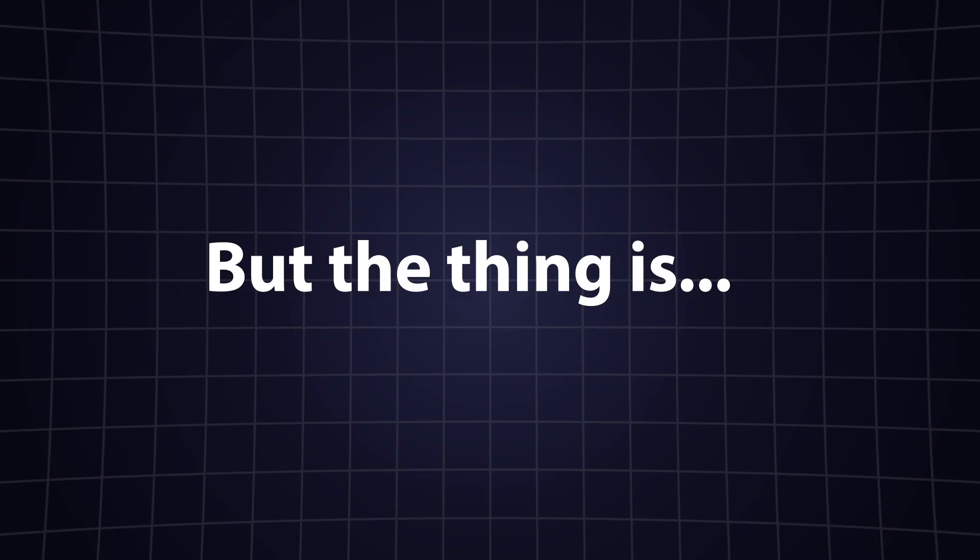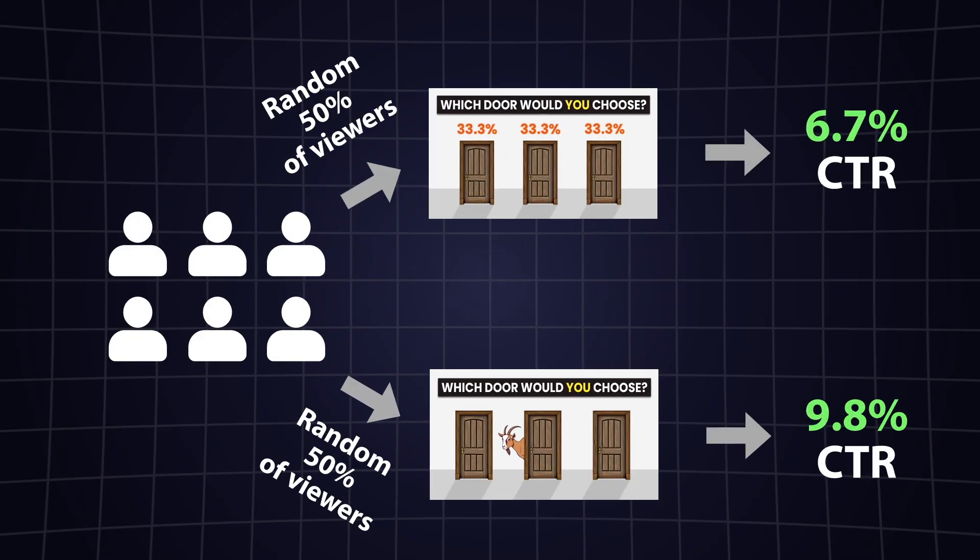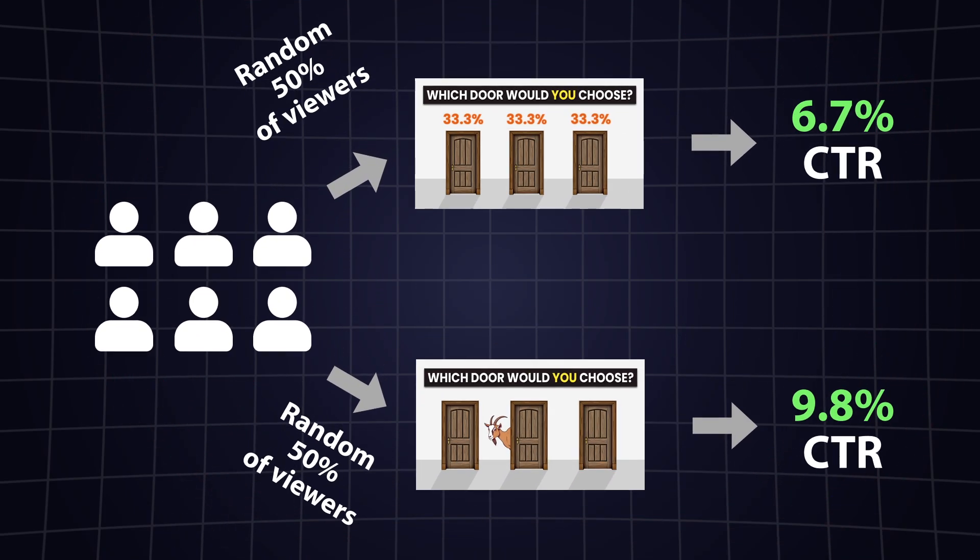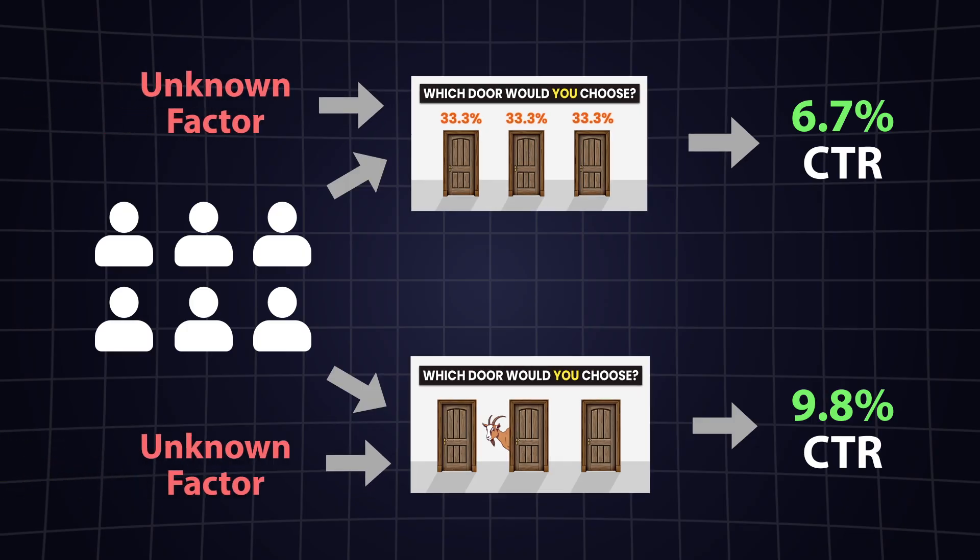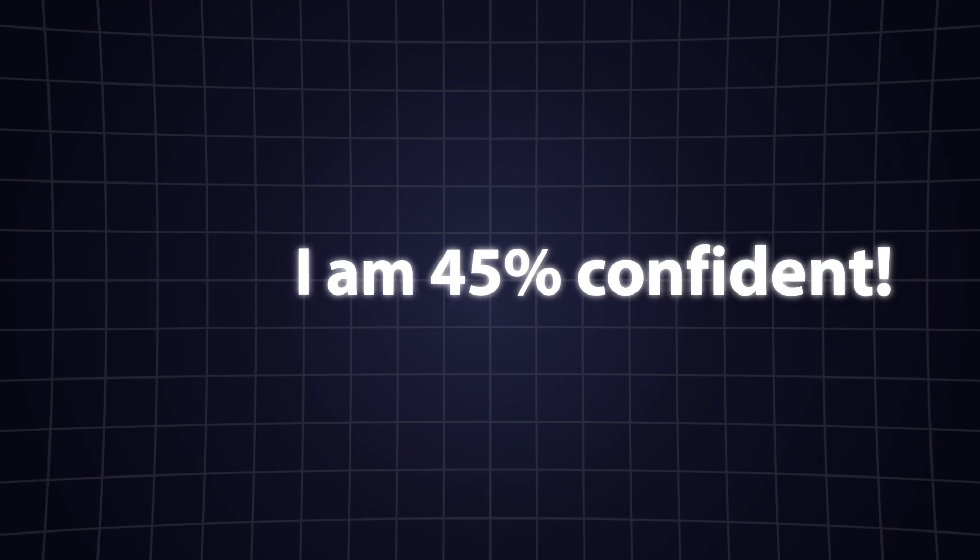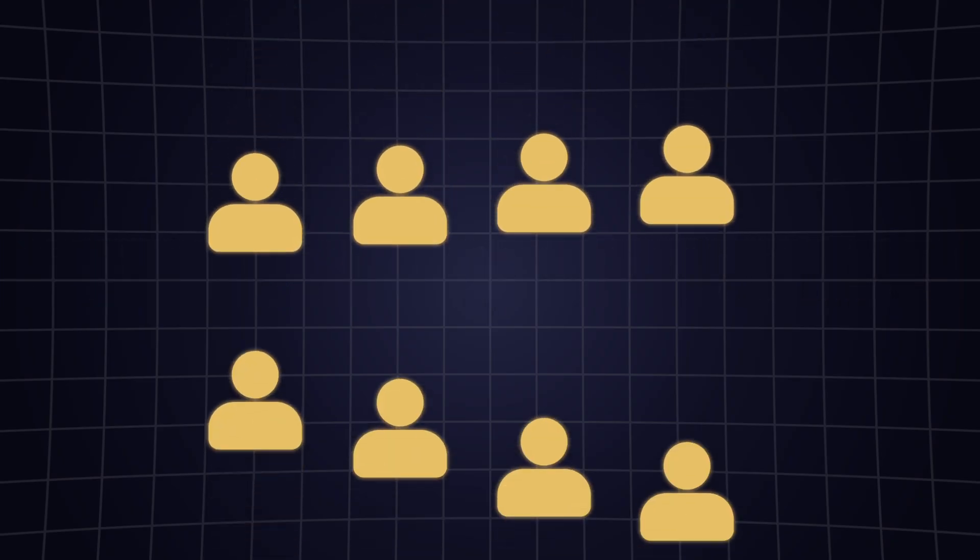But here's the thing. Even with a perfectly designed A-B test, we can rarely claim pure, 100% certain causation. There's always the possibility that some unknown factor we didn't measure is still influencing the results. The goal is to reduce the uncertainty as much as possible, and make well-informed decisions based on the best available evidence.